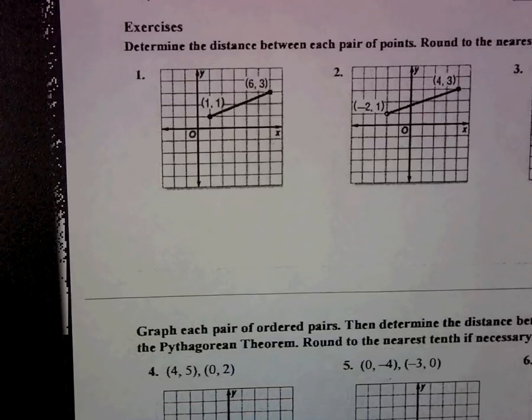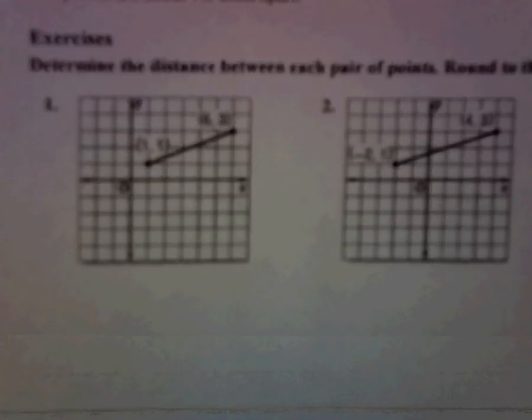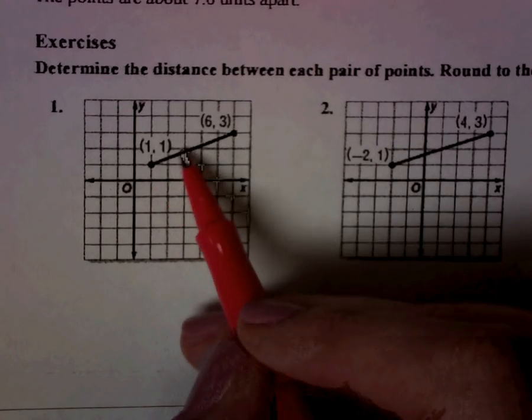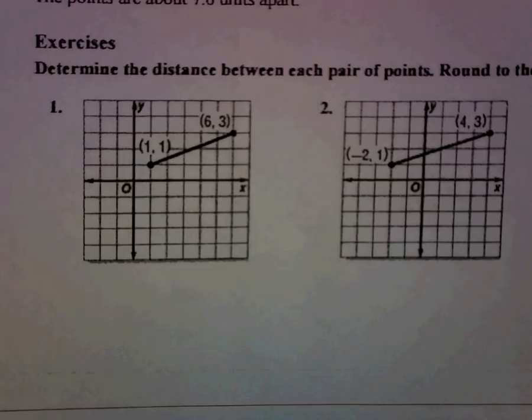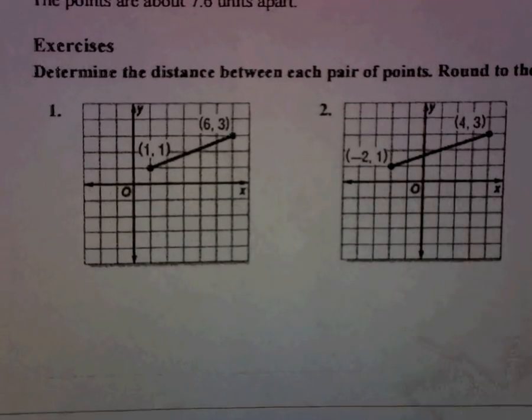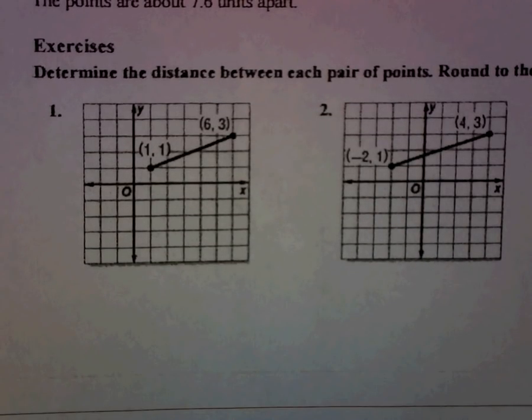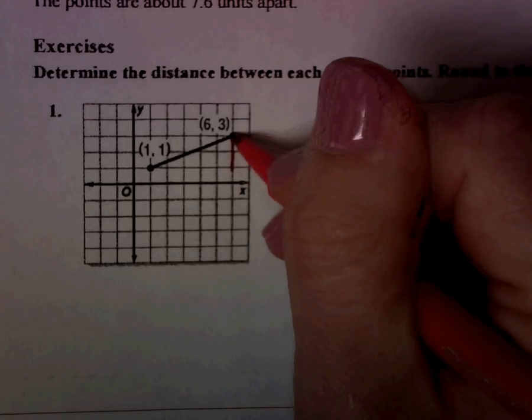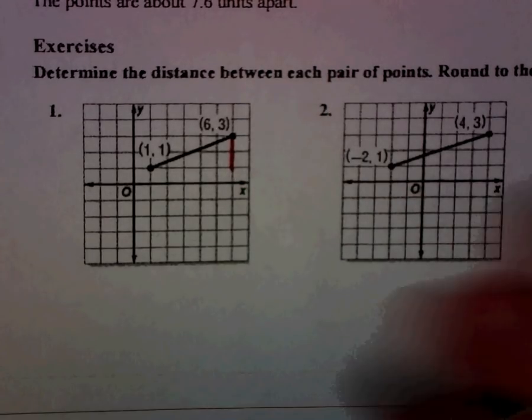So let's look at the first example. I've given you the two points, 1, 1 and 6, 3. We already have our line. I can't count this to find the length. But I can draw a right triangle. Now, one of the trickiest parts is we have to make sure we're drawing a right triangle. So we've got to keep everything straight.